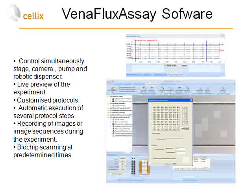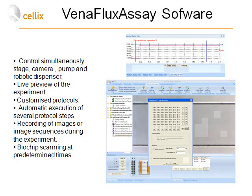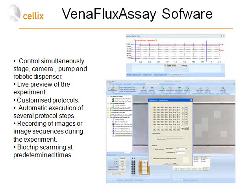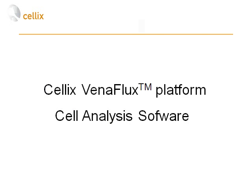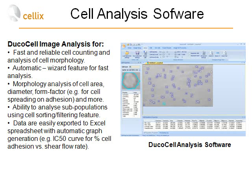The software also provides a live preview of the experiment. It allows you to load customized protocols, modify them, and save them to different files. You can automatically execute several steps of the protocol and record images or sequences of images from predetermined positions on the chip. A dialog shows that seven positions of the chip have been selected to be scanned, and the biochips can be scanned at predetermined times. The graph on top shows with a blue line when the biochip will be scanned and how the shear stress is changing during that particular experiment. Once images are collected, there is a need to analyze the number of cells attached, cells rolling, and the morphology of cells during different experiments.